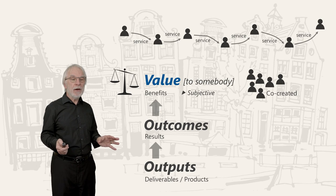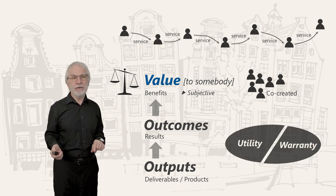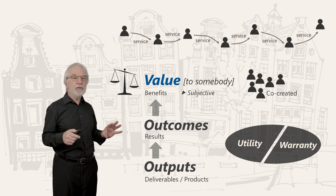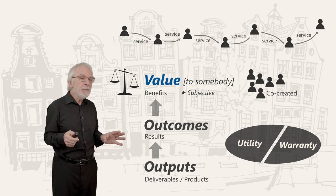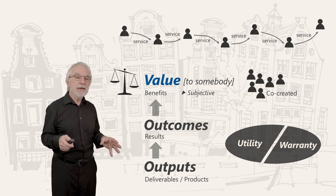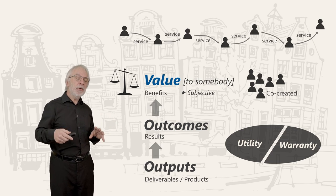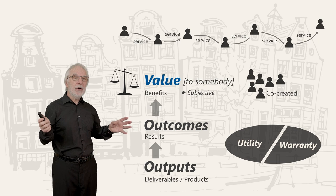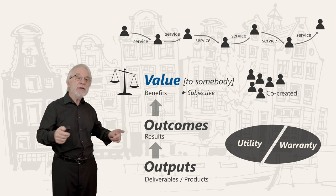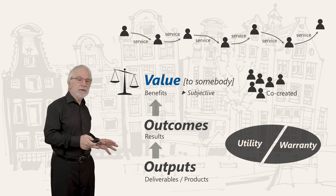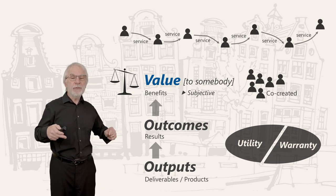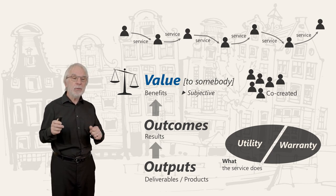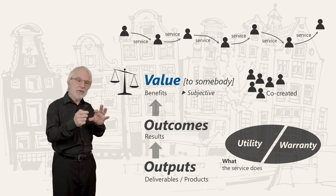Aspects of value are worth considering too. ITIL uses the terms 'utility' and 'warranty.' Those words have been around a while, but be careful — they don't mean what they mean in ordinary everyday English. They're examples of hijacked words: perfectly good everyday words that have been given a very specific meaning in our context. Utility is the functionality offered by a product or service — it's about what the service does, whether it's fit for the purpose you want it for. If you like, it's how you will utilise it. That's functional requirements in old-fashioned IT speak.